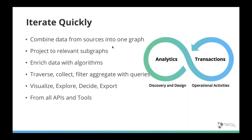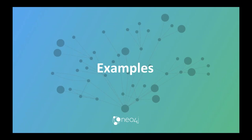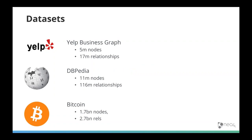The idea with all of these is that we should be able to iterate very quickly, enrich our data with the algorithm results, and then plug those into any other APIs and tools we're using. Let me show you some examples. We have three datasets: a Yelp business graph (from the Yelp Dataset Challenge — 11 cities, with businesses, reviews, users, tips, and check-ins), DBpedia (the structured version of Wikipedia — all the links between pages but not the free text), and Bitcoin, which contains the full Bitcoin blockchain: 1.7 billion nodes and 2.7 billion relationships.